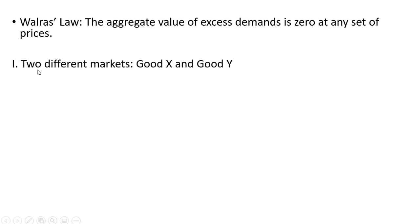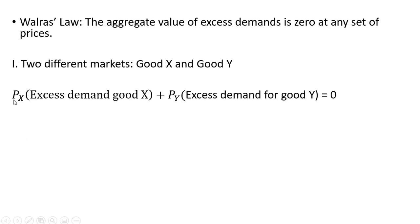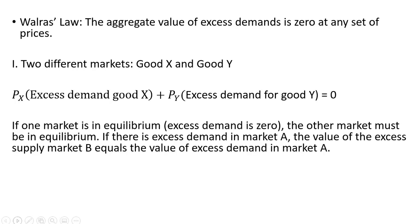Let's look at the case where we have two different markets, the market for good X and the market for good Y. The price of good X multiplied by the excess demand for good X, plus the price of good Y multiplied by the excess demand for good Y, equals zero according to Walras' Law. If one market is in equilibrium, that is excess demand is zero, the other market must also be in equilibrium.